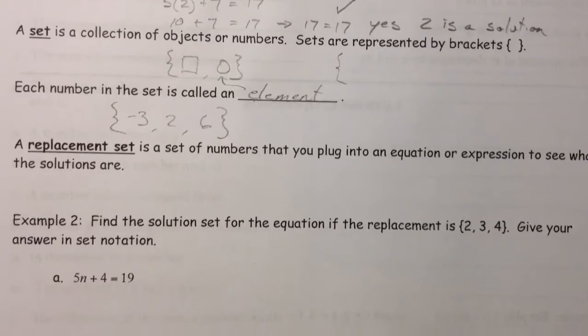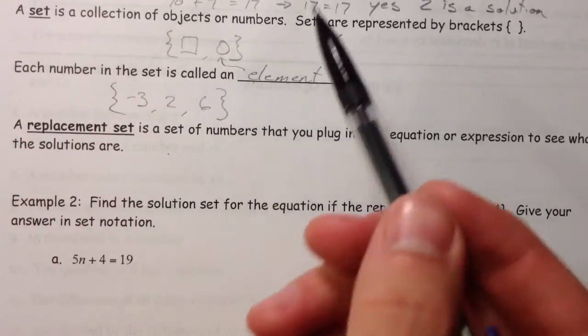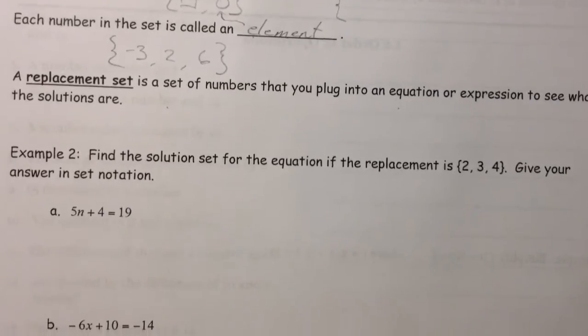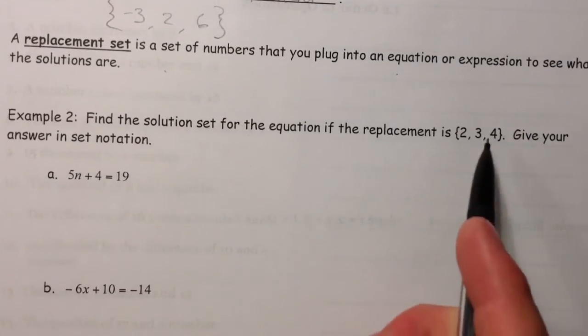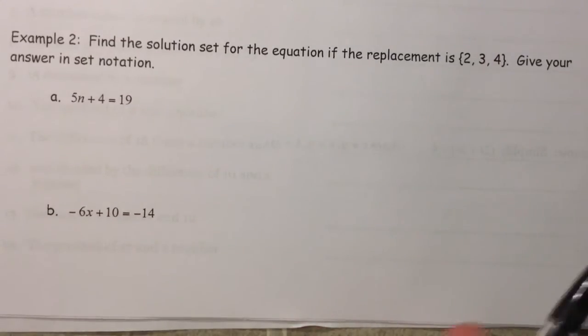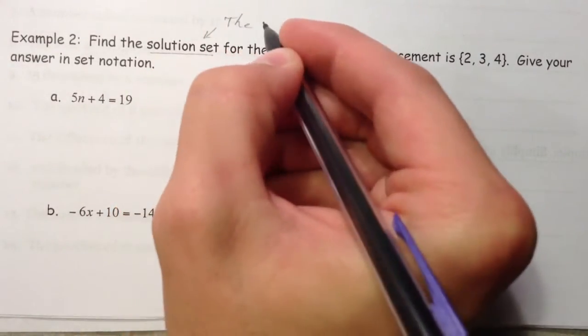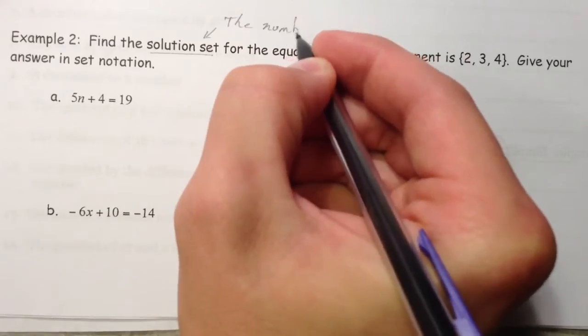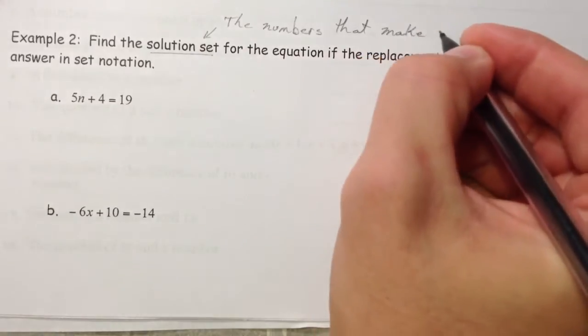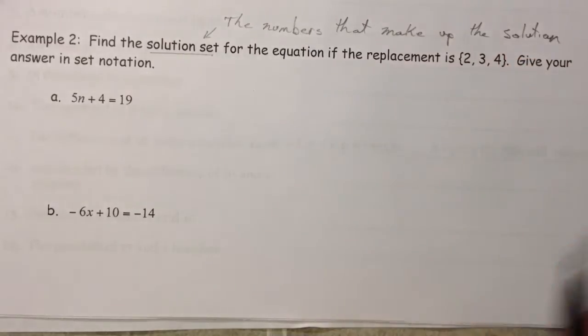And so up here, negative 3, 2, and 6 could have been part of a set. For example, negative 3, 2, and 6. And so together they make up the set. One single piece is an element. Now what we used up there was called a replacement set. Negative 3, 2, 6 were the numbers that we took and plugged into the equation to see what the solutions are. And so what we're going to do now is do the exact same thing we just did, but with 2, 3, and 4 and a new equation.